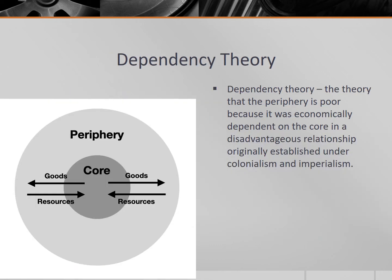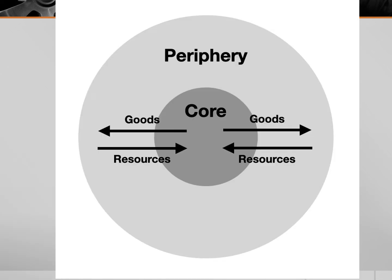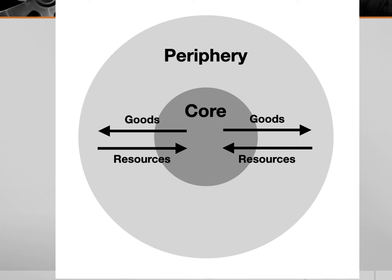The world systems theory built on an earlier theory known as dependency theory. Basically, dependency theory is the theory that the periphery is poor because it was economically dependent on the core in a disadvantageous relationship originally established under colonialism and imperialism. It states that peripheral countries offer cheap labor and raw materials to the global market. Core countries buy the raw materials and hire the cheap labor, utilizing these to produce finished goods, thereby adding value and selling them for higher prices. Peripheral countries will then buy these products, essentially transferring funds that might otherwise improve their country, creating a situation of perpetual underdevelopment.